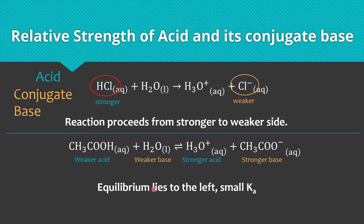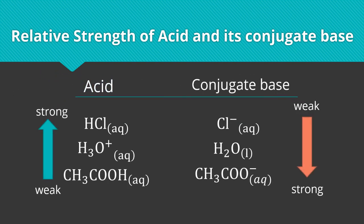Combining these comparisons: HCl has conjugate base Cl⁻, hydronium ion has conjugate base water, and acetic acid has conjugate base acetate ion. The strength of acid increases in the order acetic acid < hydronium ion < HCl, and the strength of the conjugate base increases in the opposite direction. A strong acid has a weak conjugate base, and a weak acid has a strong conjugate base.